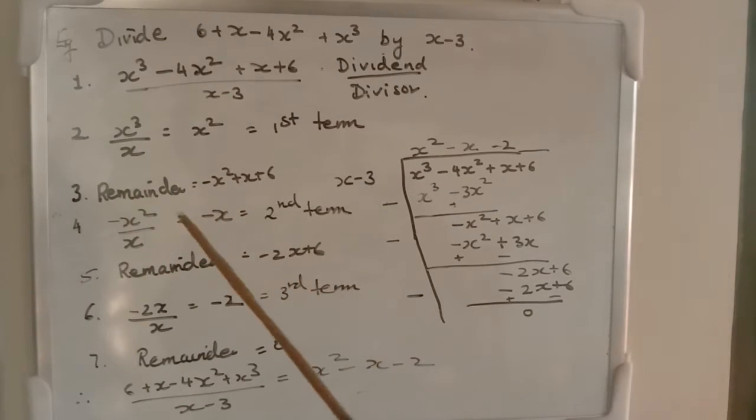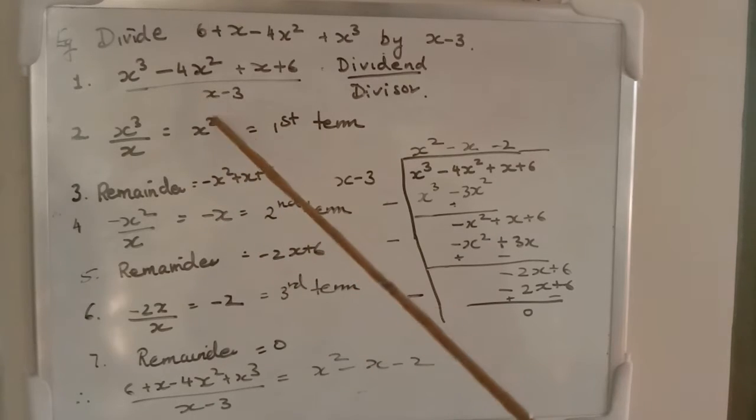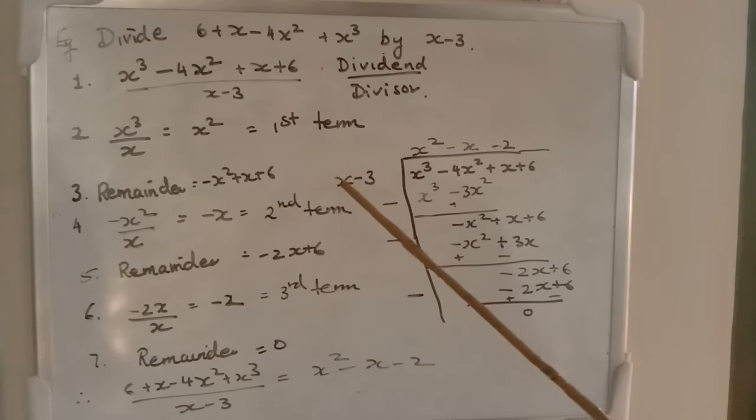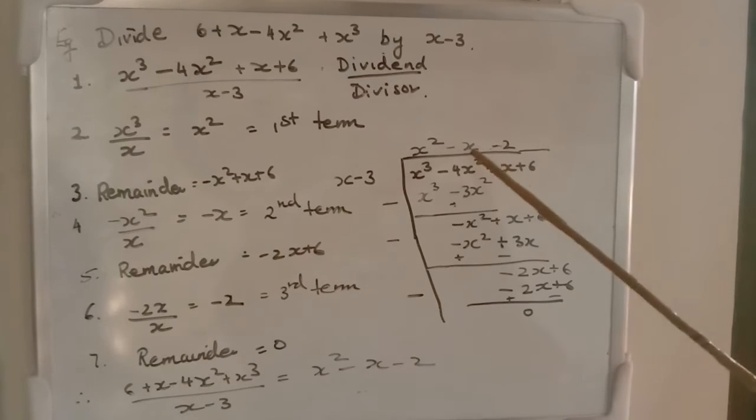Again, what will we do? We will repeat the second step. What is that? Dividing the first term of the remainder with the first term of the divisor. What is -x² by x? -x, which is the second term.